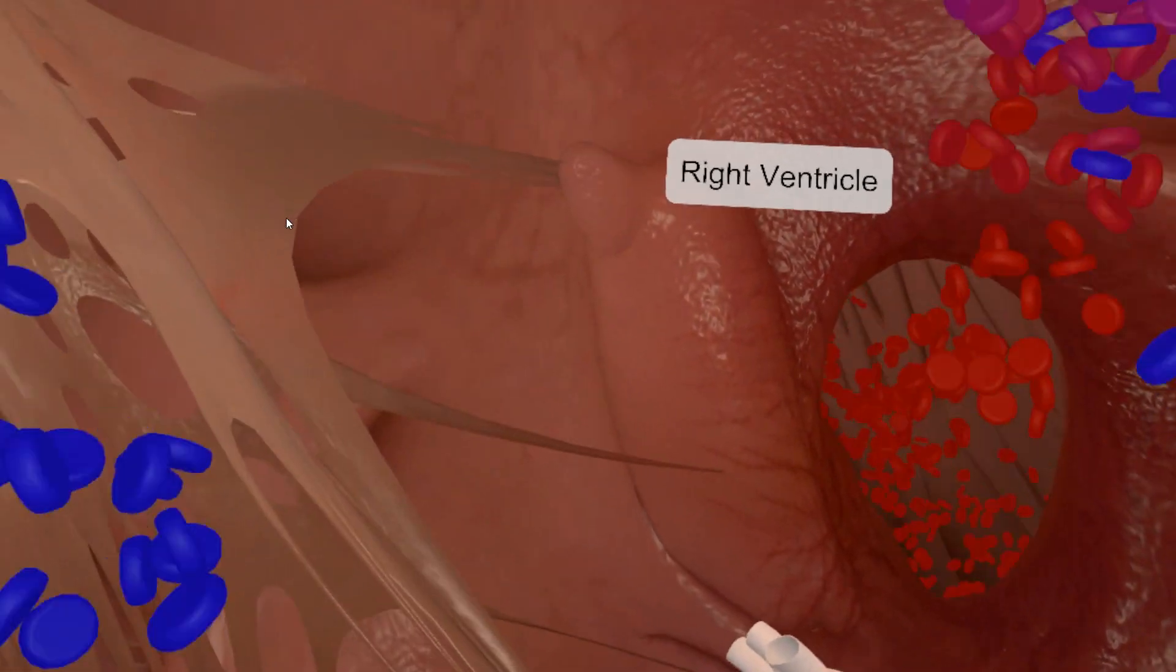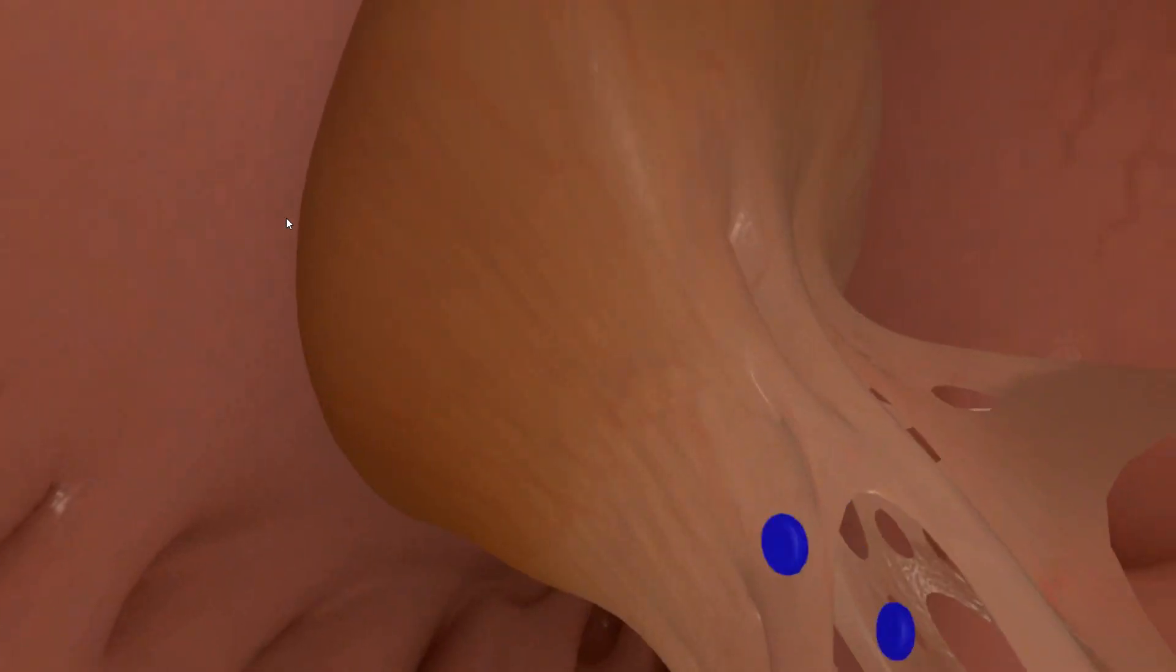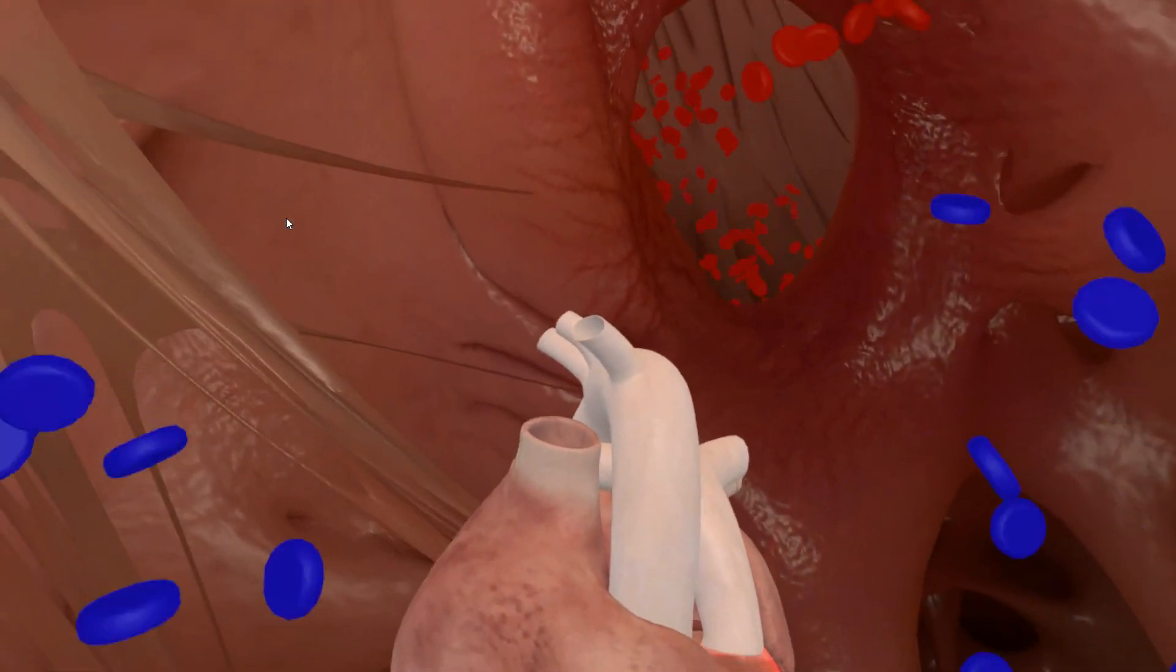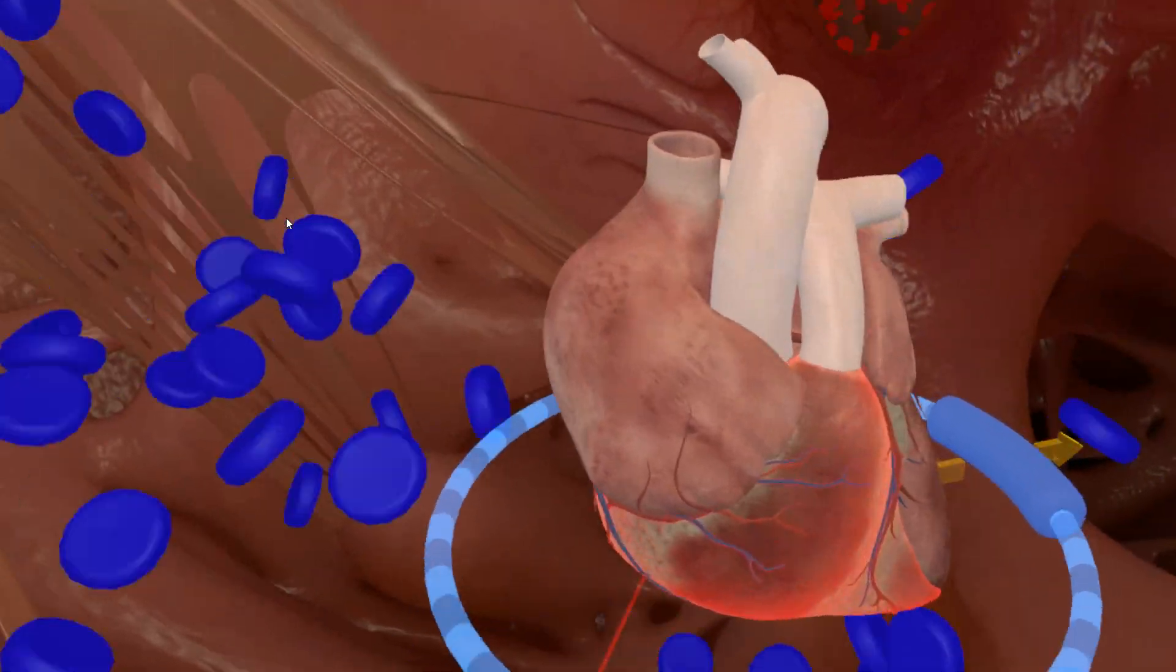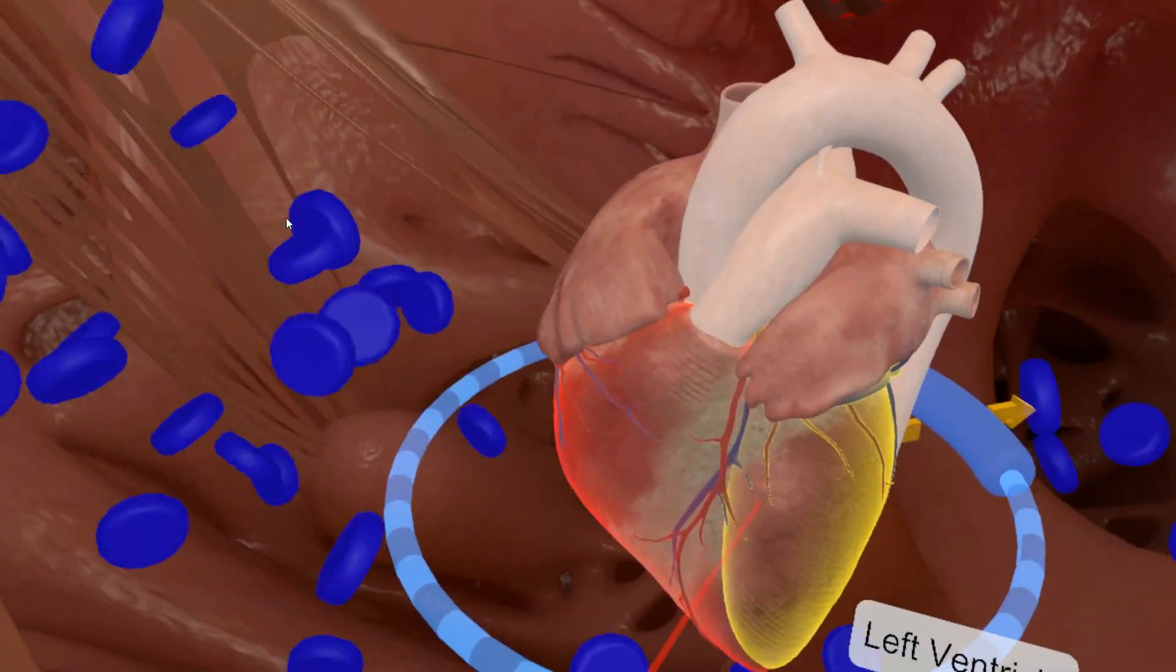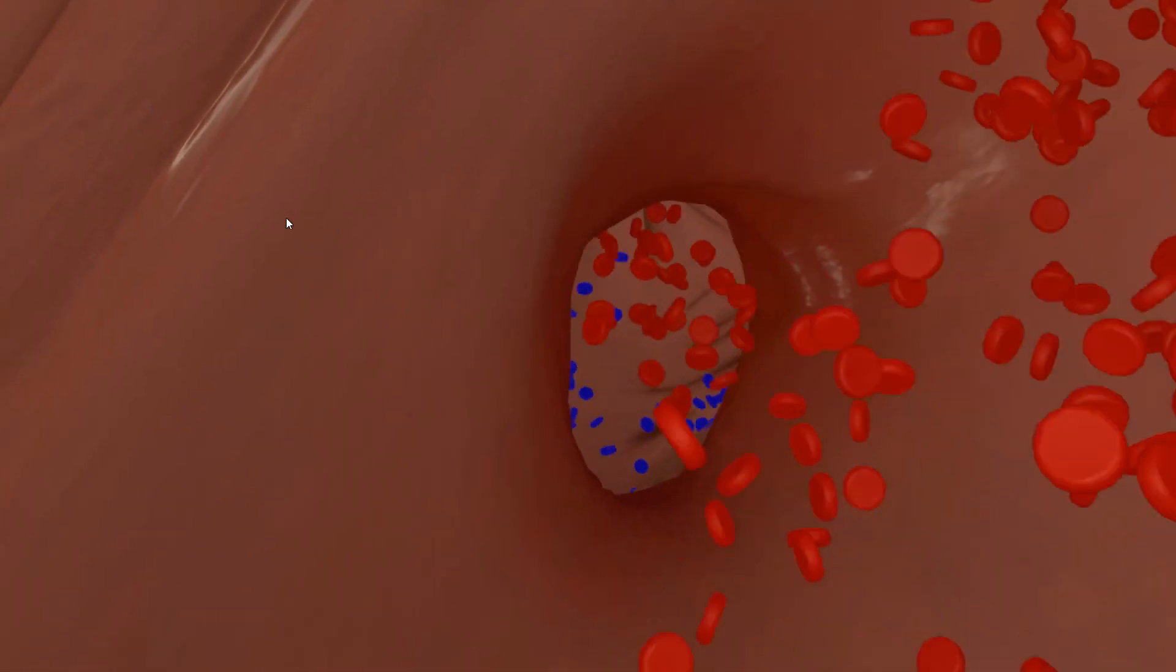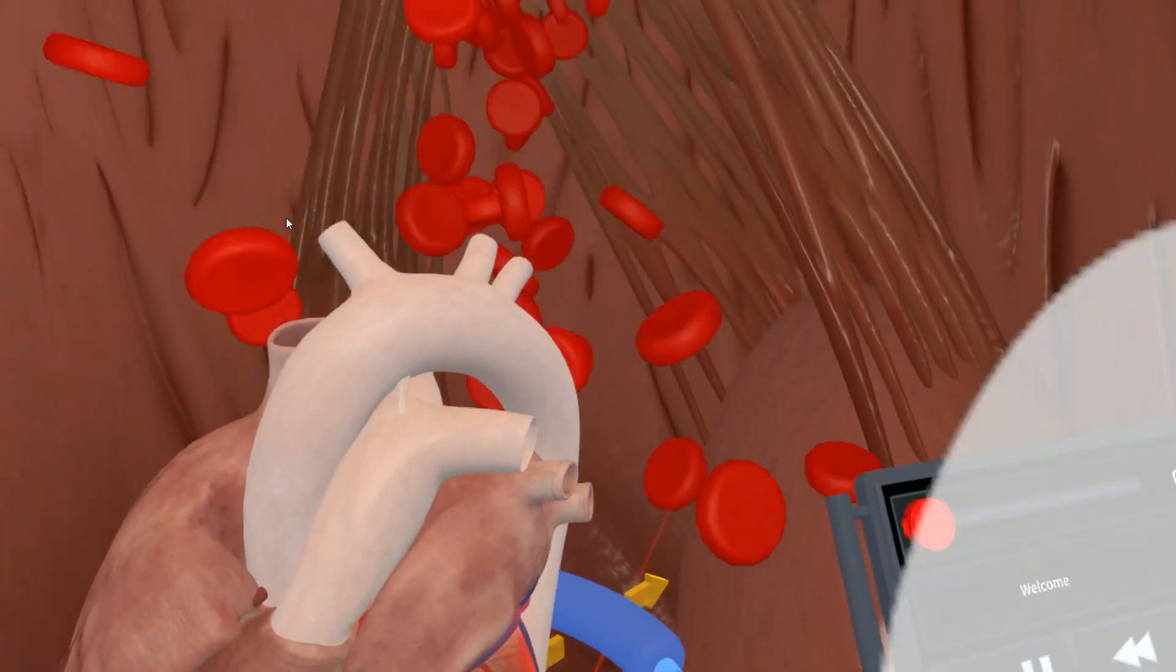I can also teleport myself to inside the heart and can hear where this blood is flowing from one side to the other. Let's go to the left ventricle. You can hear the lub, the dub, and the murmur that is caused by the hole in the heart.